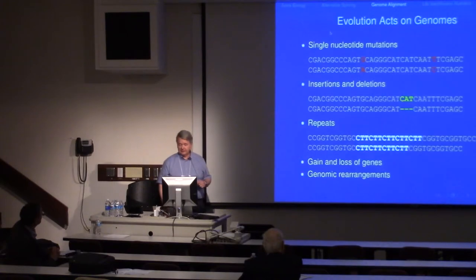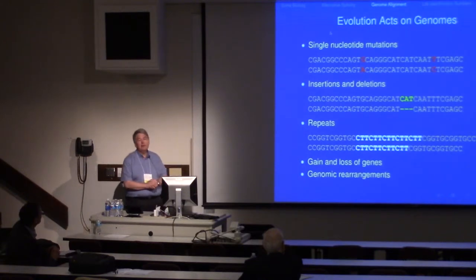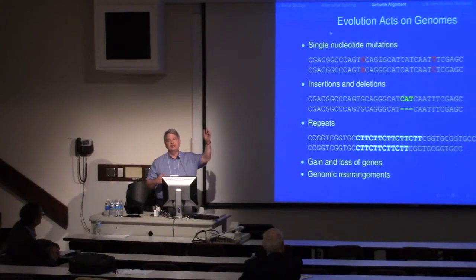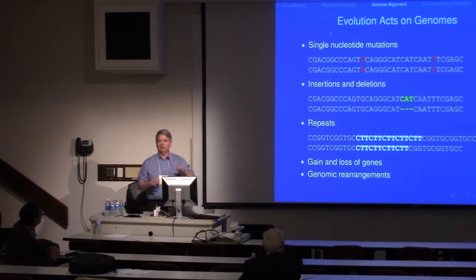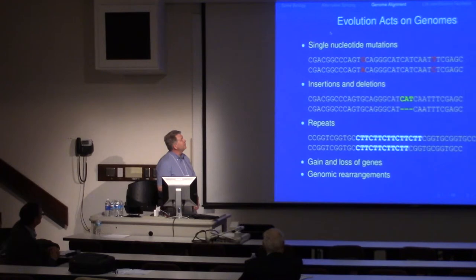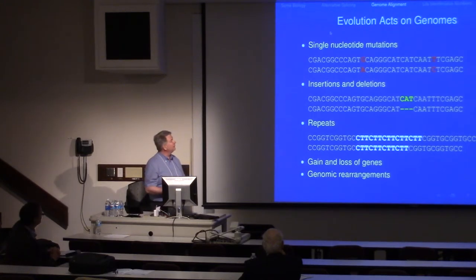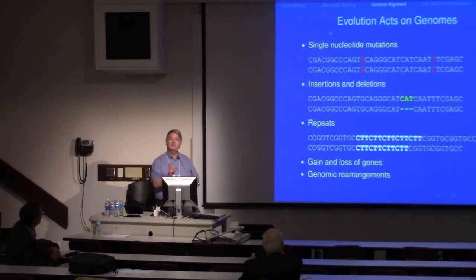Genome alignment is the second project I wanted to mention. Let's think about evolution — it acts on genomes. We think of an ancestral genome, some changes occur — mutations — and we come up with a current genome. What kinds of mutations are we particularly likely to see? We see single nucleotide changes, which are fairly common. We see insertions and deletions — places where little pieces of the sequence have been removed or added.